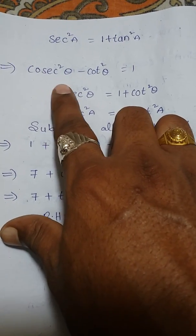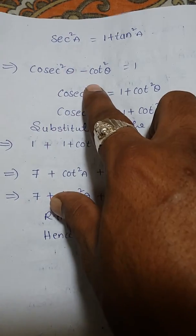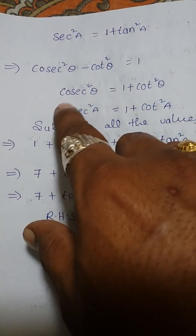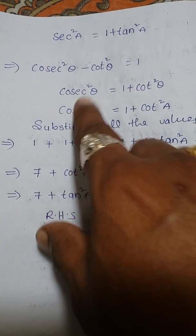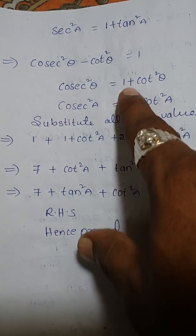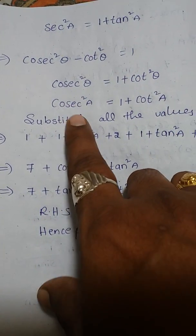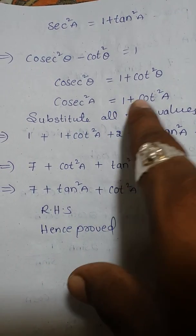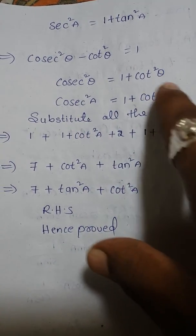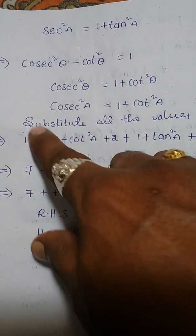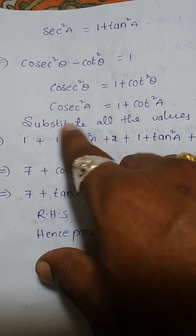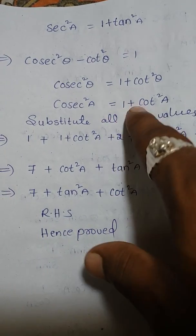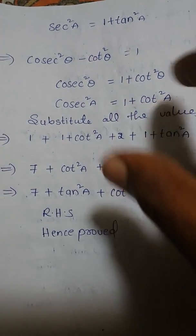Using the identity cosec²θ - cot²θ = 1, so cosec²θ = 1 + cot²θ. Therefore cosec²A = 1 + cot²A. We replace cosec²A in our expression with 1 + cot²A.